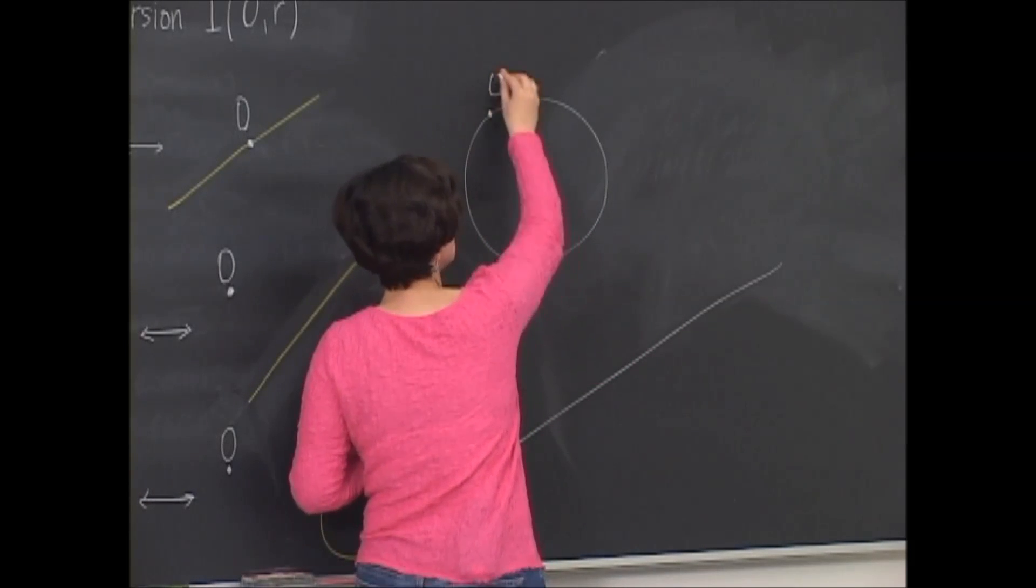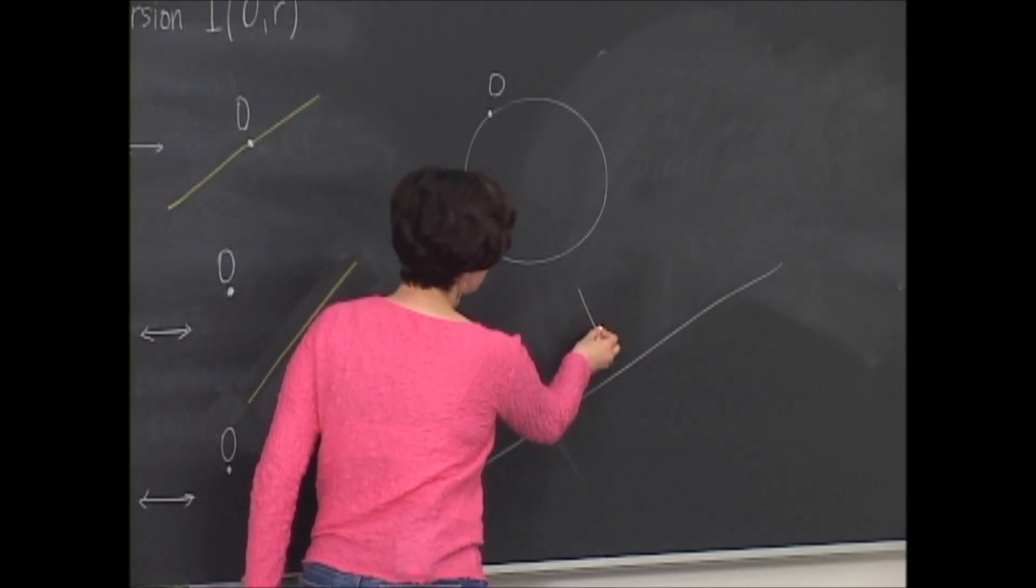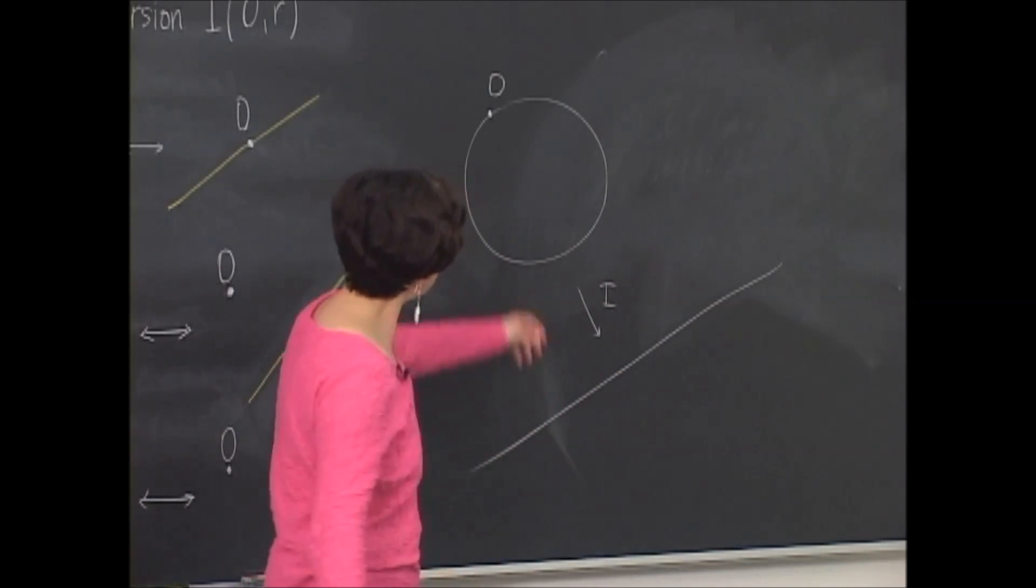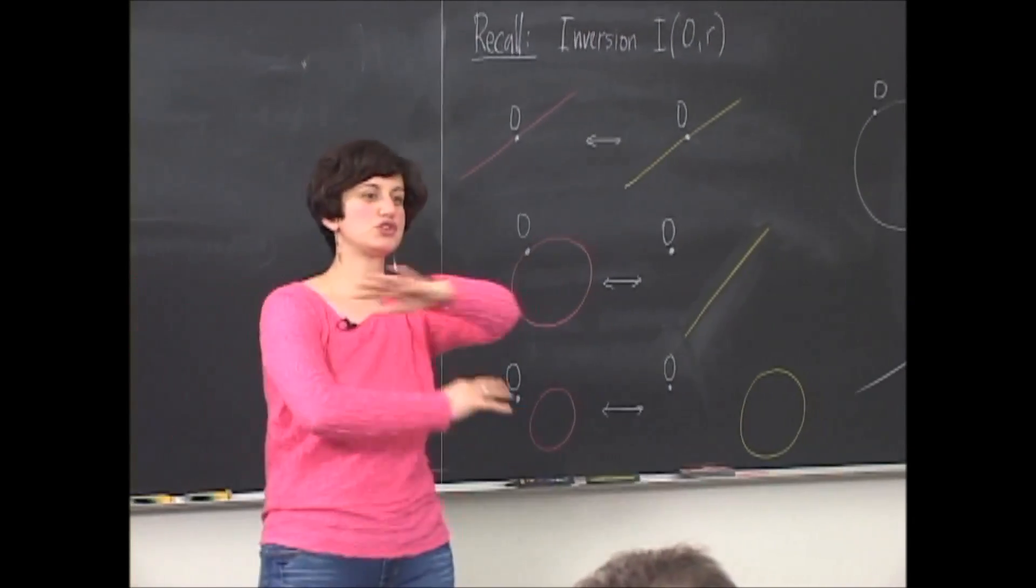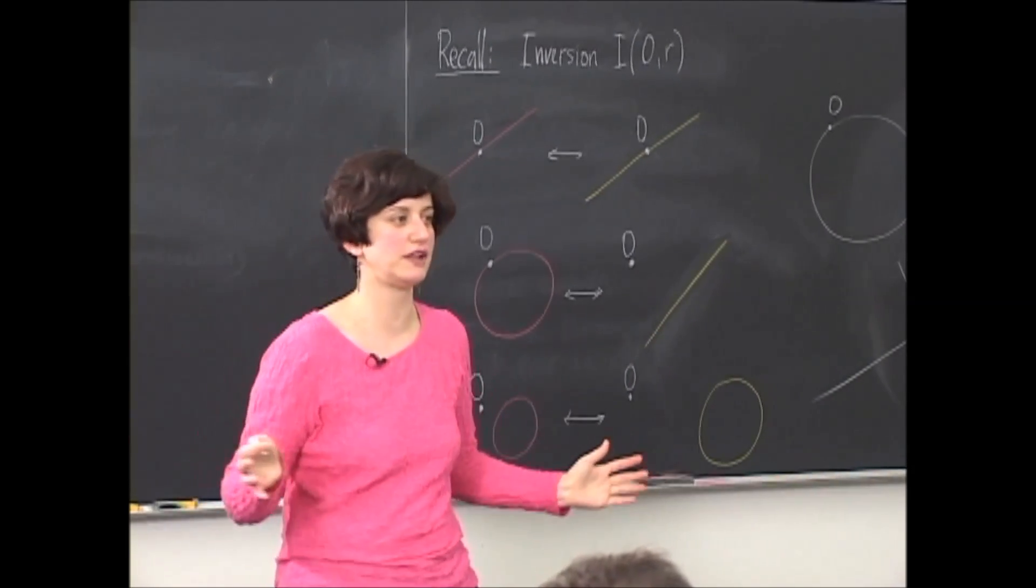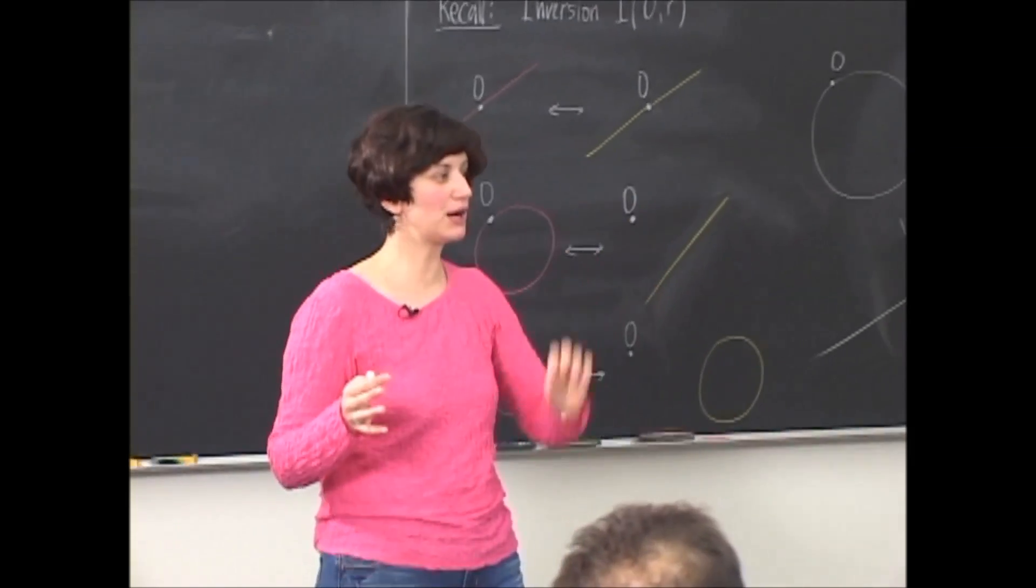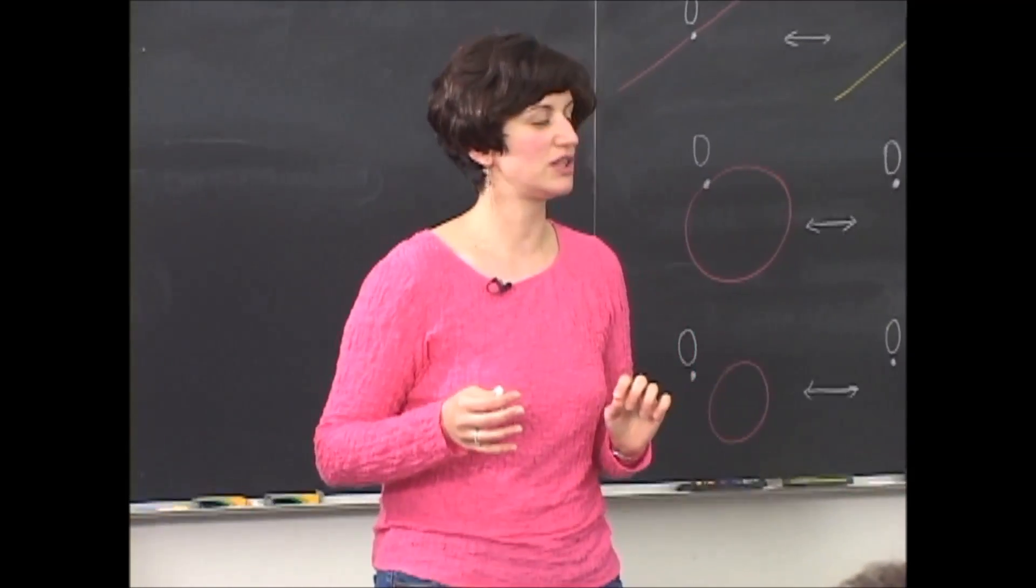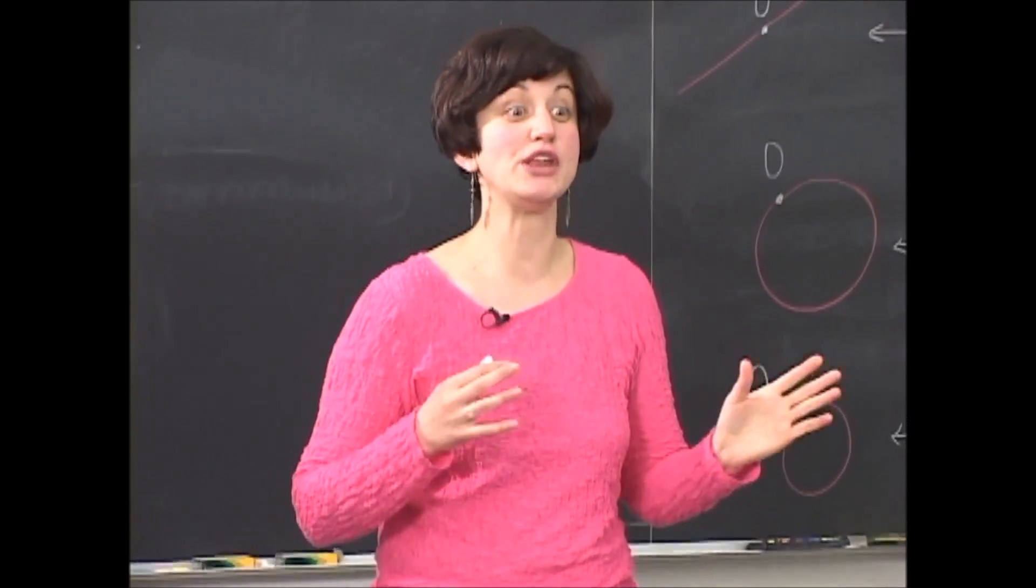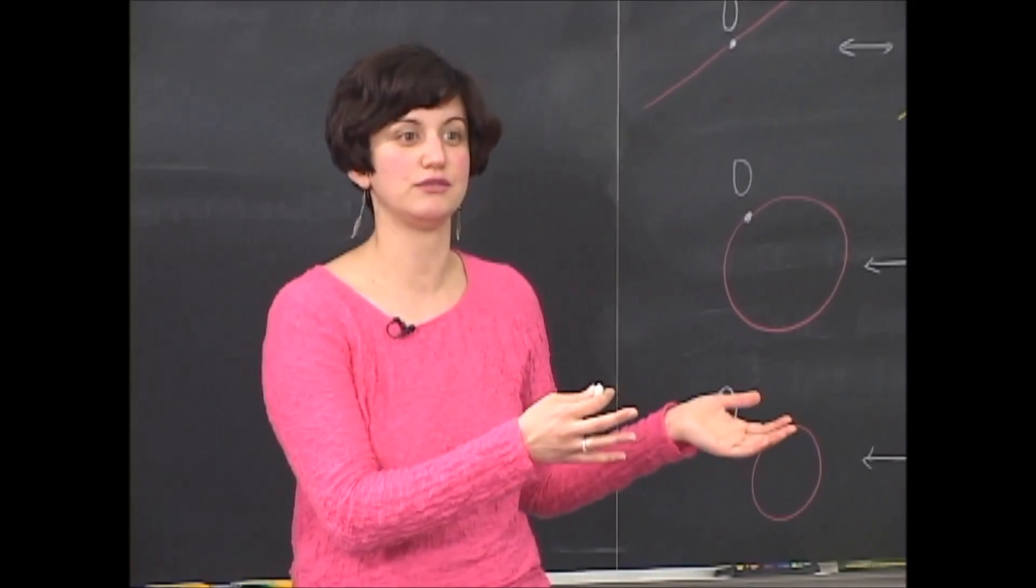Anywhere on the circle would do the trick. Anywhere, if I call this O, then inversion is going to map this circle into some line. So inversion is just some kind of transformation of the plane, like reflection or translation.